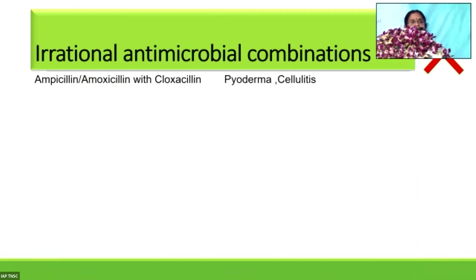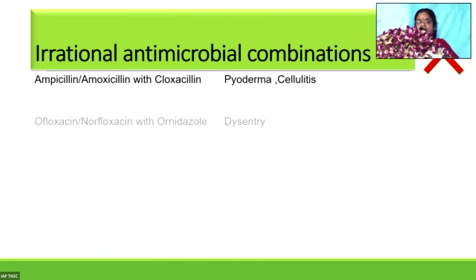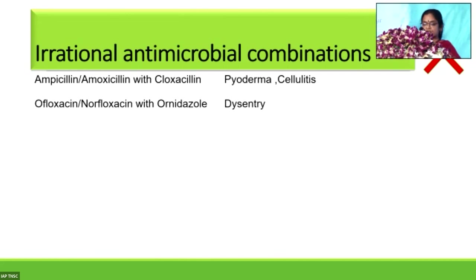Before proceeding to rational antimicrobial combinations, here are some irrational combinations to avoid. In pyoderma and cellulitis, most of us choose Ampilox or Amoxiclox — this is an irrational combination. In dysentery, using ofloxacin plus ornidazole is irrational.